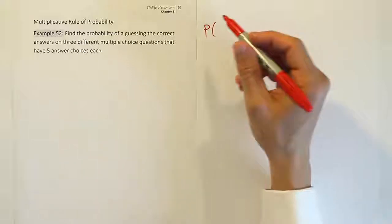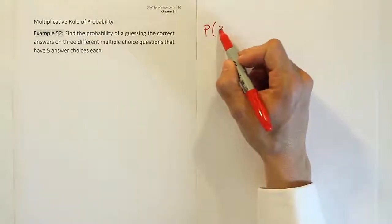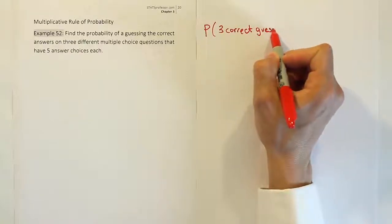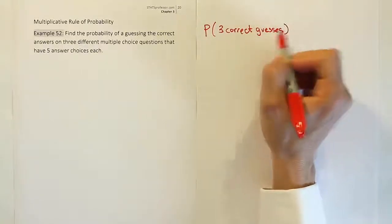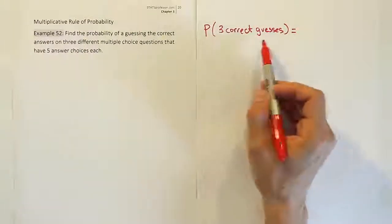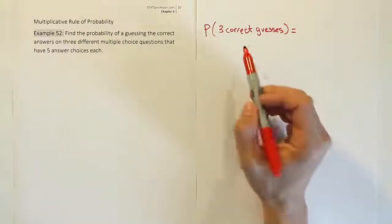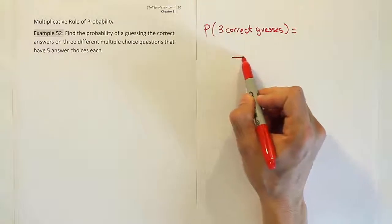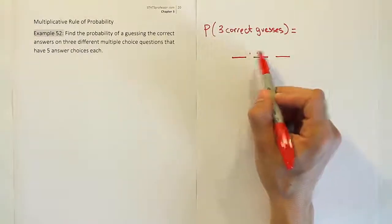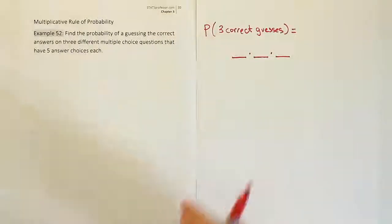We write the probability of, and in this case, we're looking for three correct guesses out of three guesses. We won't write all of that. We'll just write three correct guesses. And by the context of the problem, we'll remember that it's out of three guesses. So because it's only three guesses, we'll have three spaces. The three spaces represent the three guesses. And we're going to put multiplication between them because we're handling the multiplication rule.